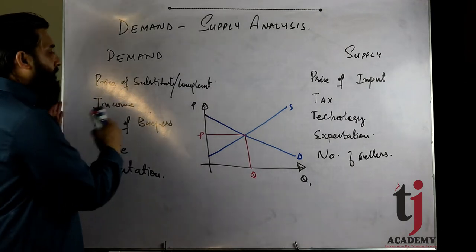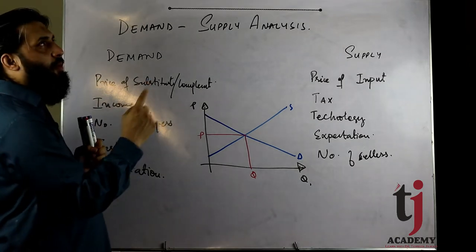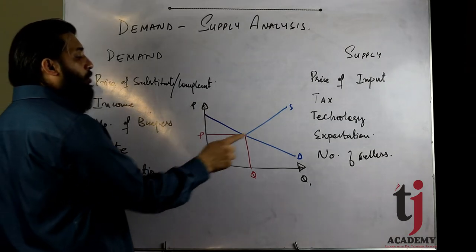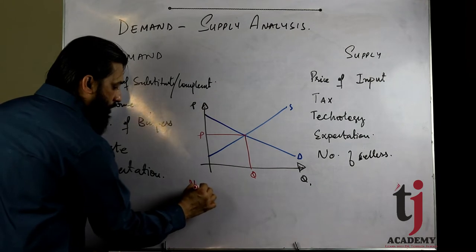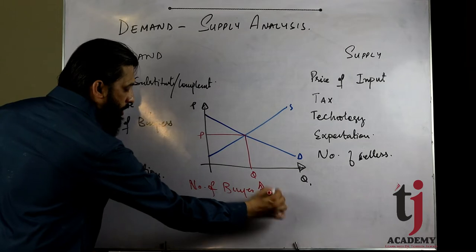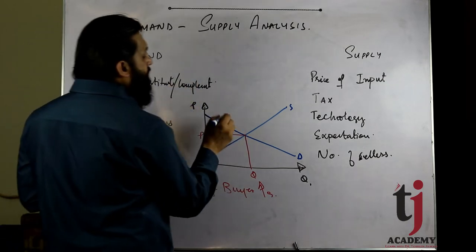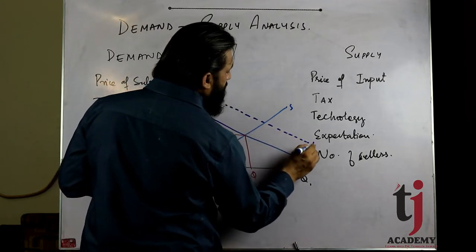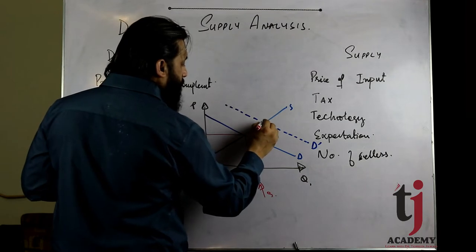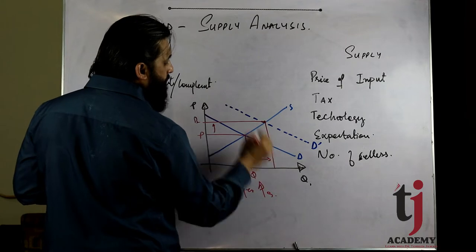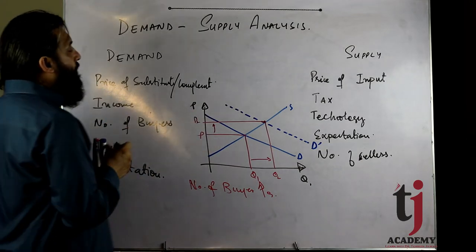Case 1: Number of Buyers बढ़ गए। यह buyers की side का factor है, demand side का। Number of Buyers के बढ़ने का मतलब है demand बढ़ जाएगी। Quantity X-axis पर है, तो बढ़ने का मतलब rightward shift और कम होने का मतलब leftward shift। Price की वजह से change नहीं आ रहा — rather than price, पूरा curve shift होता है। तो Number of Buyers बढ़ने से Equilibrium Price भी increase हो गई (P2) और Equilibrium Quantity में भी इजाफा हो गया (Q1 से Q2)।